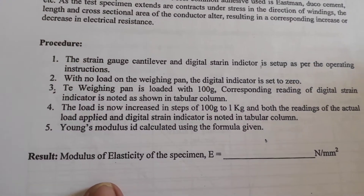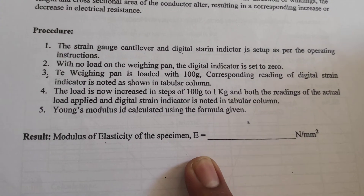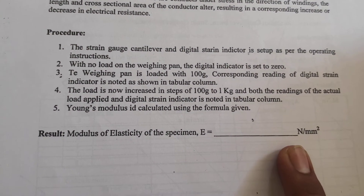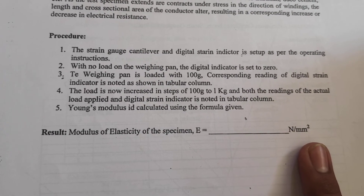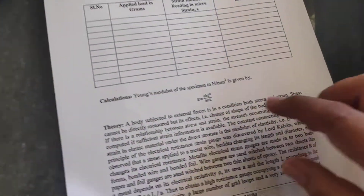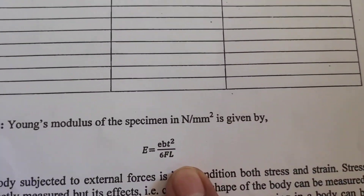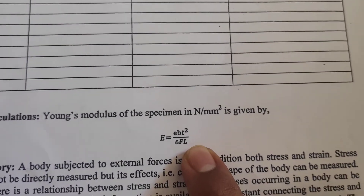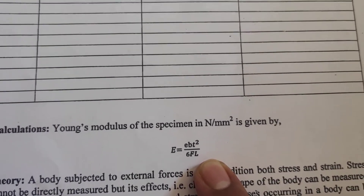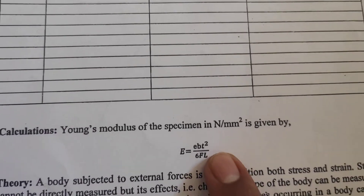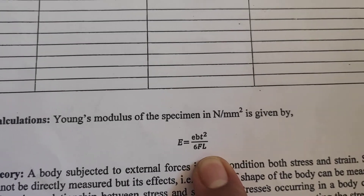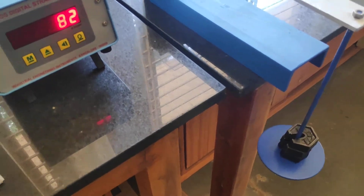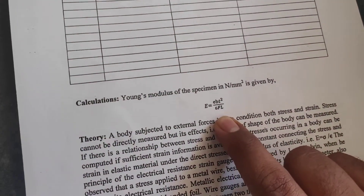Write the final result as: modulus of elasticity of the specimen E equals the value you obtain, expressed in Newton per mm squared. While doing the calculation, be careful that all units are substituted properly. If you substitute b in mm, then t and l should also be in mm. The load F is applied in grams, so you must convert it to Newtons for the calculation.